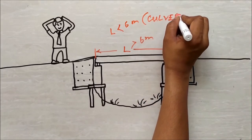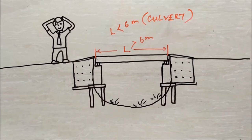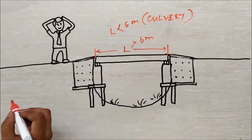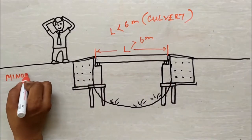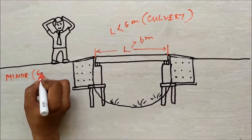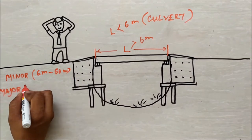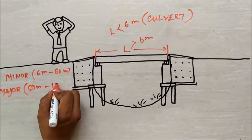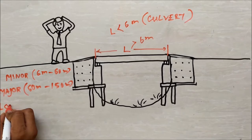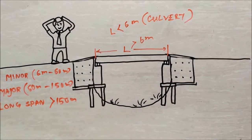Based on the length, structures are classified as minor bridge, major bridge, and long span bridge. When the length of bridge is more than six meters and up to 60 meters it is called as a minor bridge. The bridge having total length of more than 60 meters and up to 150 meters is called major bridge, and those bridges having a length of more than 150 meters are classified as long span bridges.